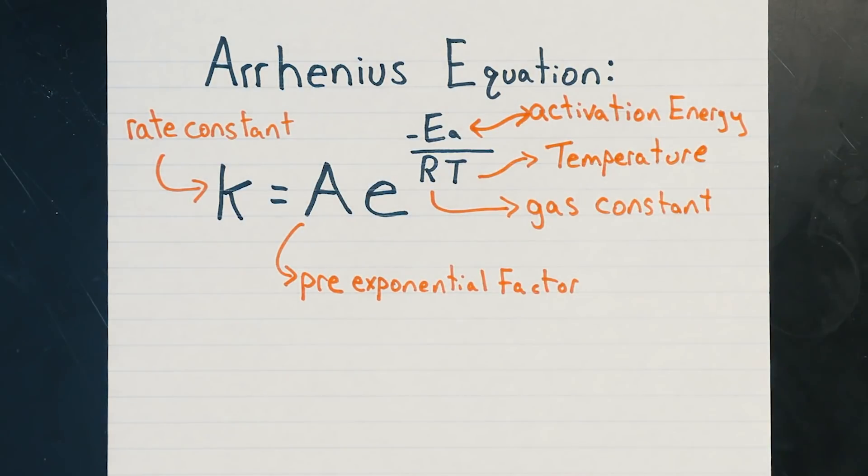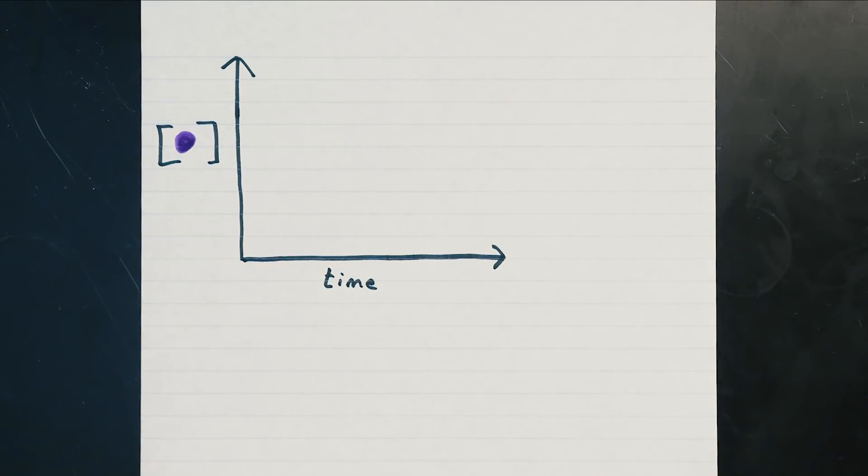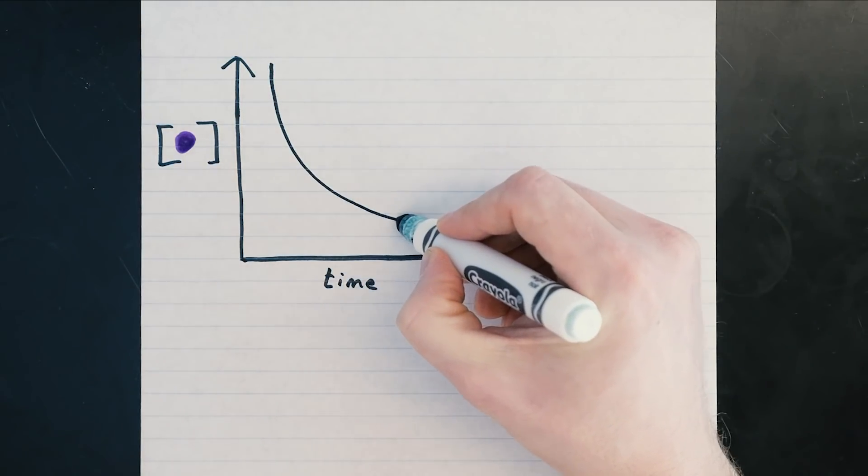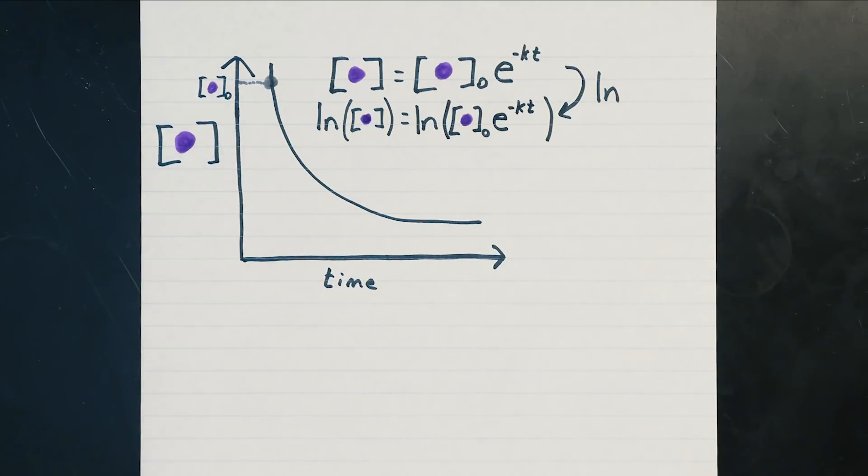So how can we measure k? Well, in a first-order reaction, the rate is always slowing down since the reactants are constantly consumed. So if we track the concentration of reactants with time, we'll notice that they decay exponentially at a rate that depends on k. By taking the natural logarithm to get rid of the exponential and rearranging a bit, we get the equation of a straight line.